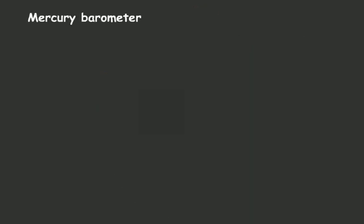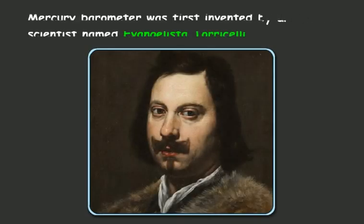Mercury barometer was first invented by an Italian scientist named Evangelista Torricelli.